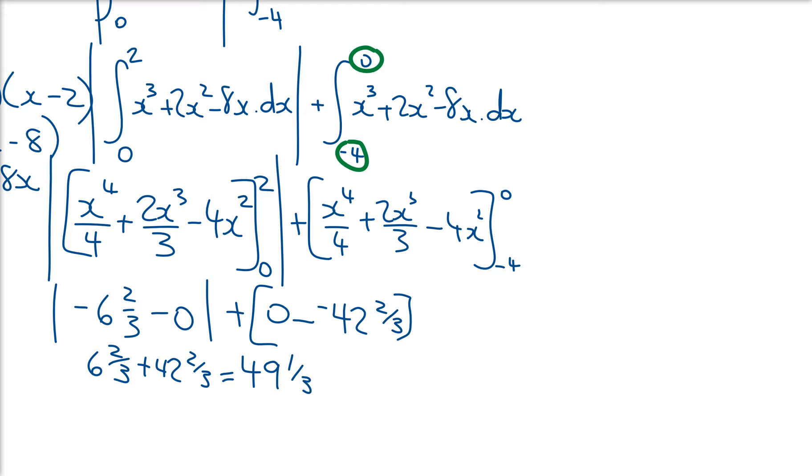You can do that on your graphics calculator. I believe you need to do it in two parts. If you do it in one part, you're going to get 42 and 2/3 minus 6 and 2/3. So you need to do it in two parts on your calculator, which maybe I might show in the video if you have time. You guys want me to show that or not? Yeah. Questions?